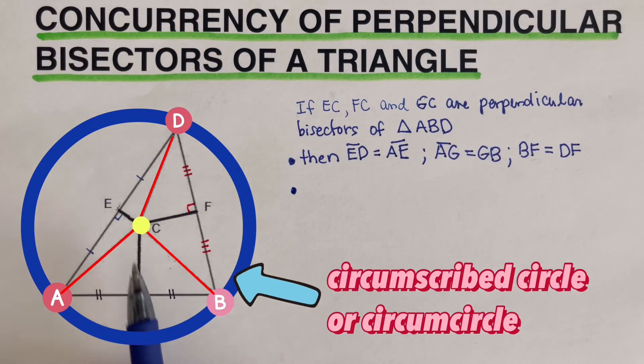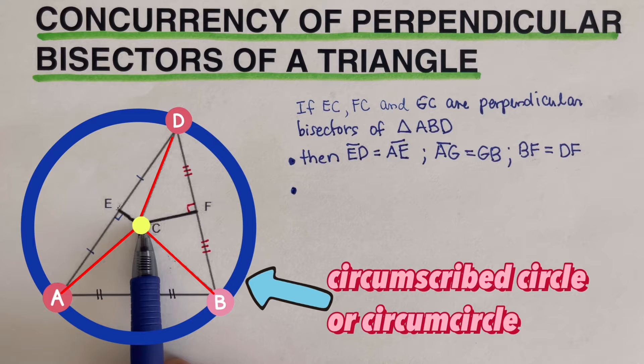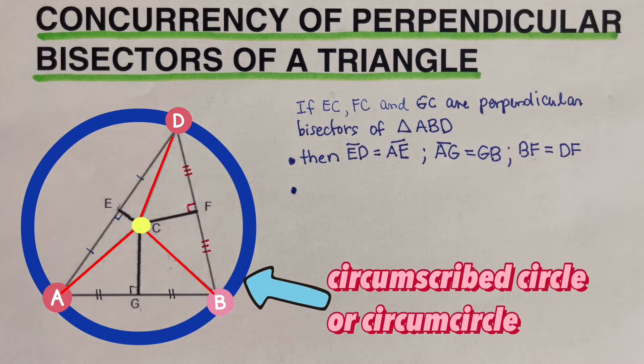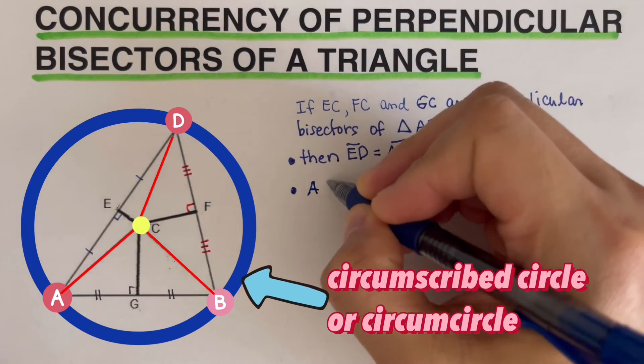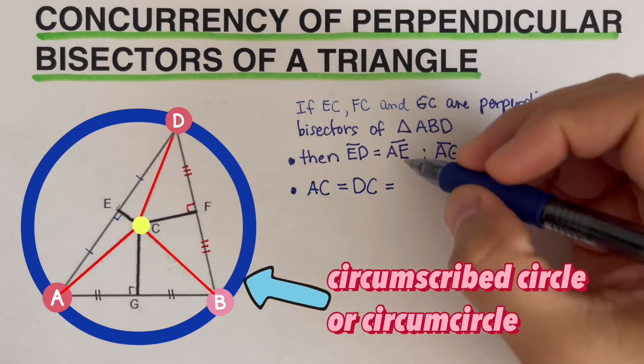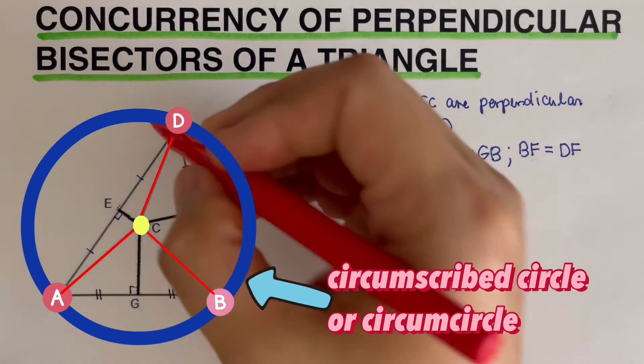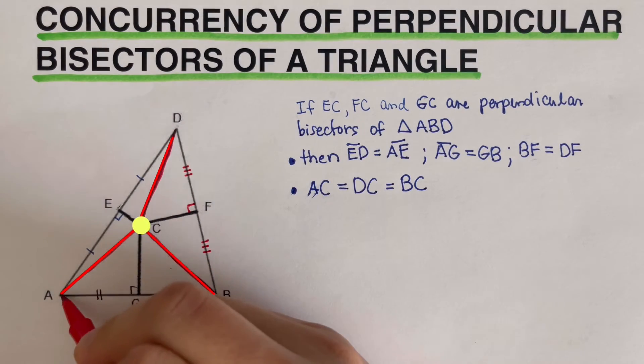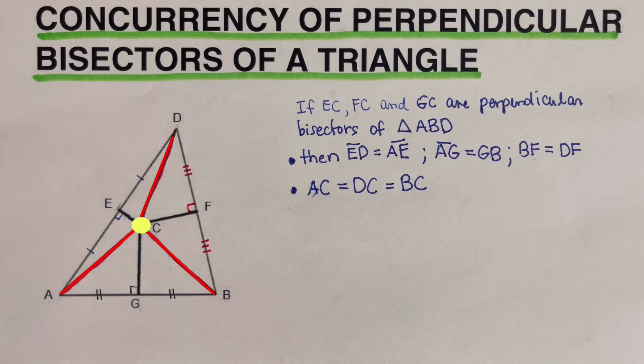So if we have EC, GC, and FC as perpendicular bisectors meeting at the circumcenter right here, which is the point of concurrency, we can go ahead and say that we have the radius AC is equal to DC, and that is also equal to BC. So I can go ahead and label that with a different color up here. So again, these are the radii of the circle, and they are congruent or equal to each other.